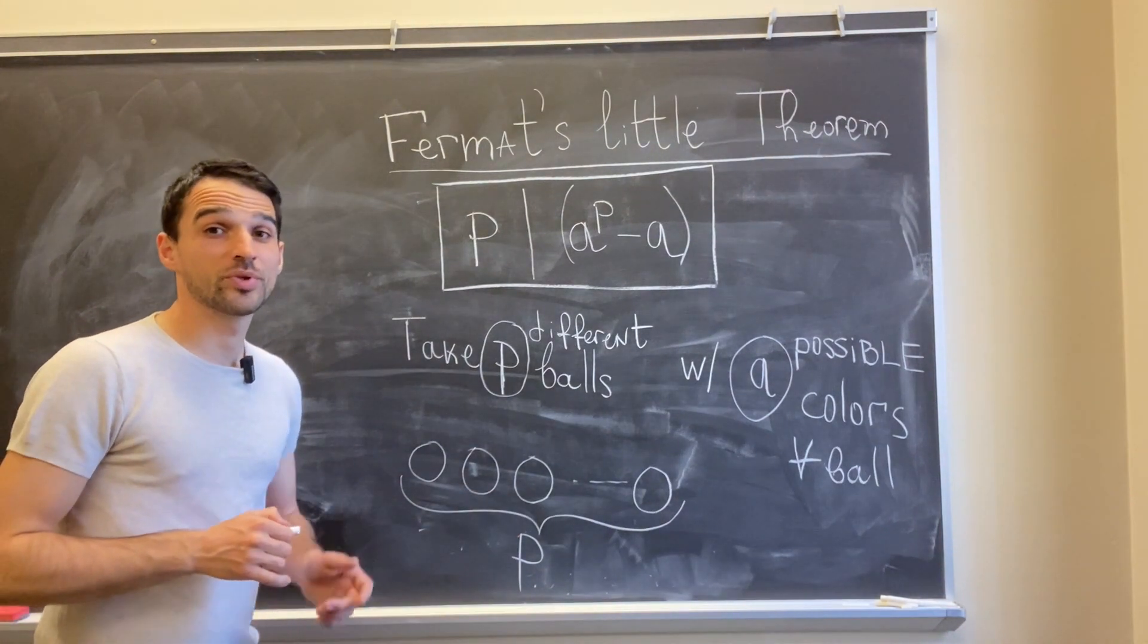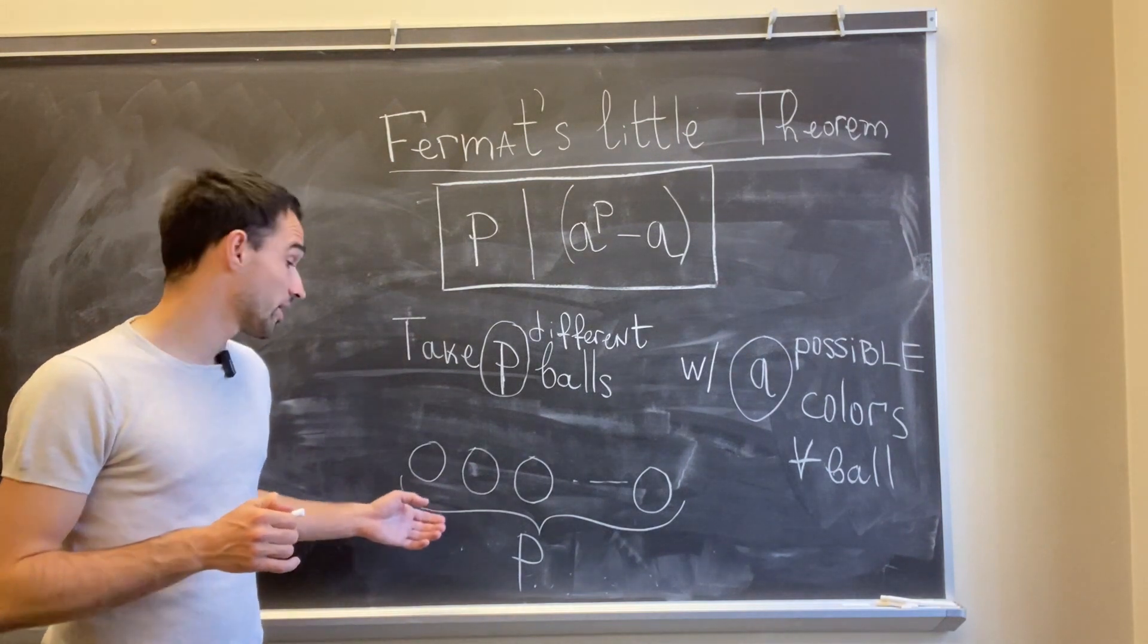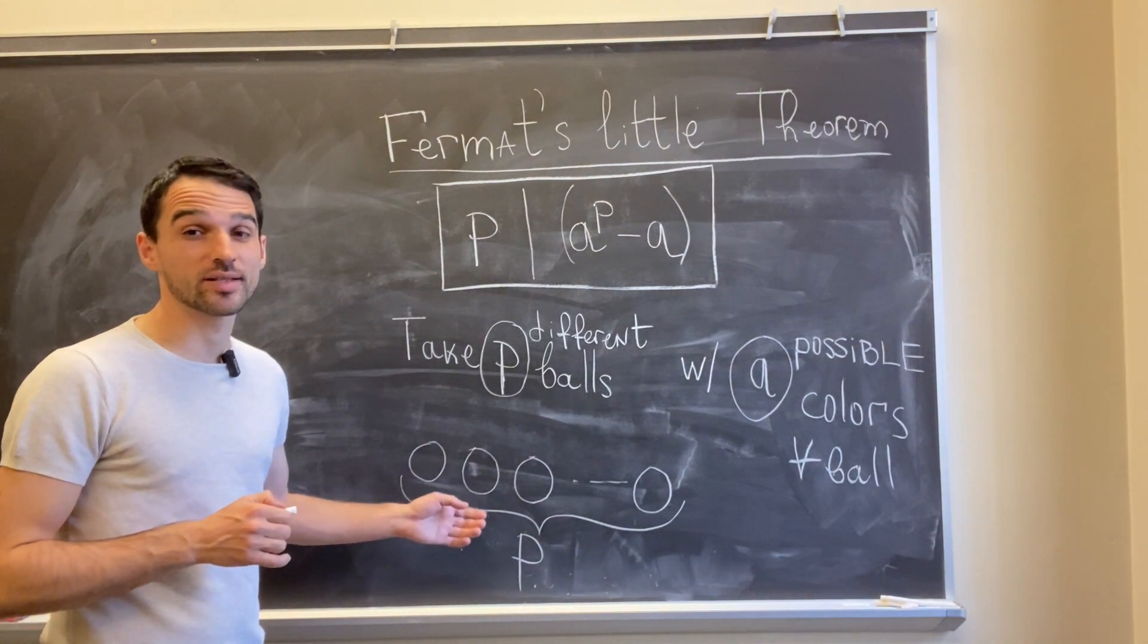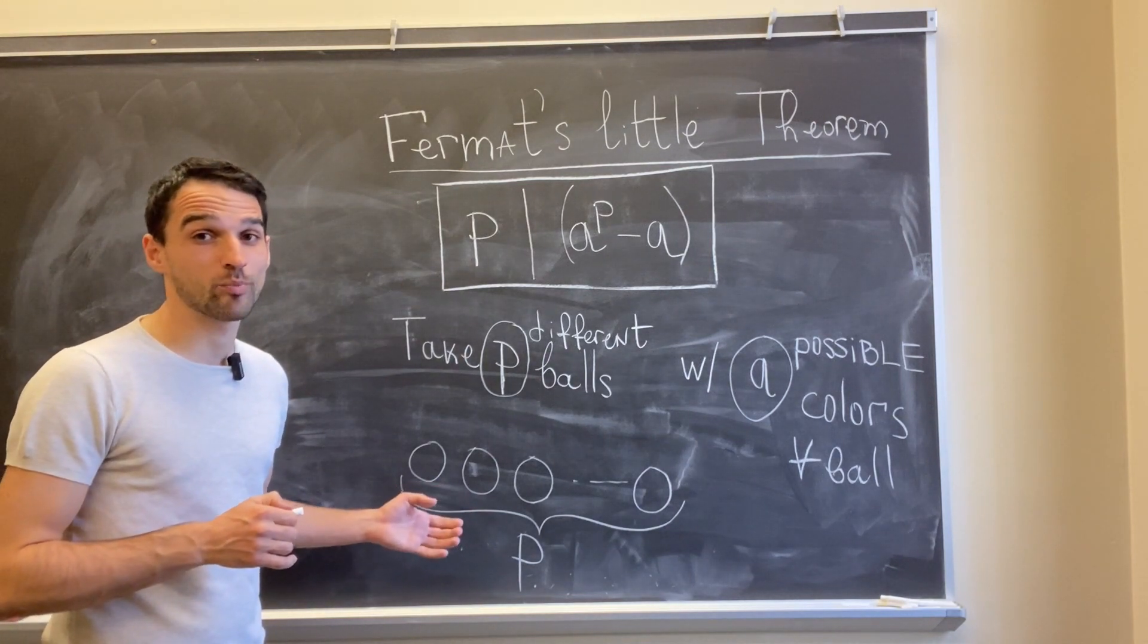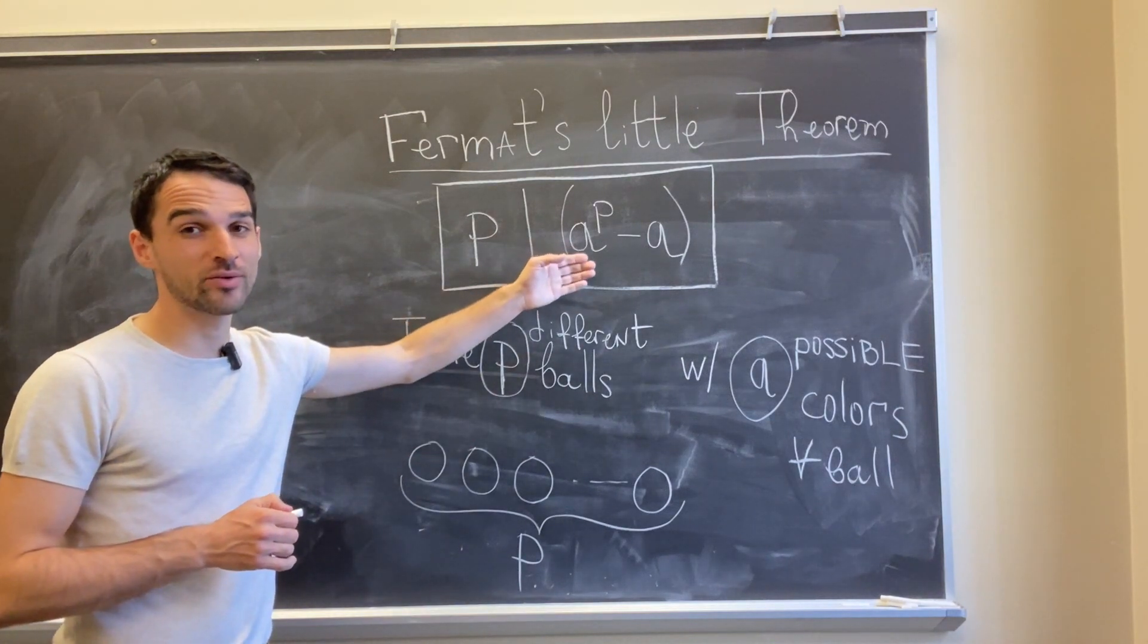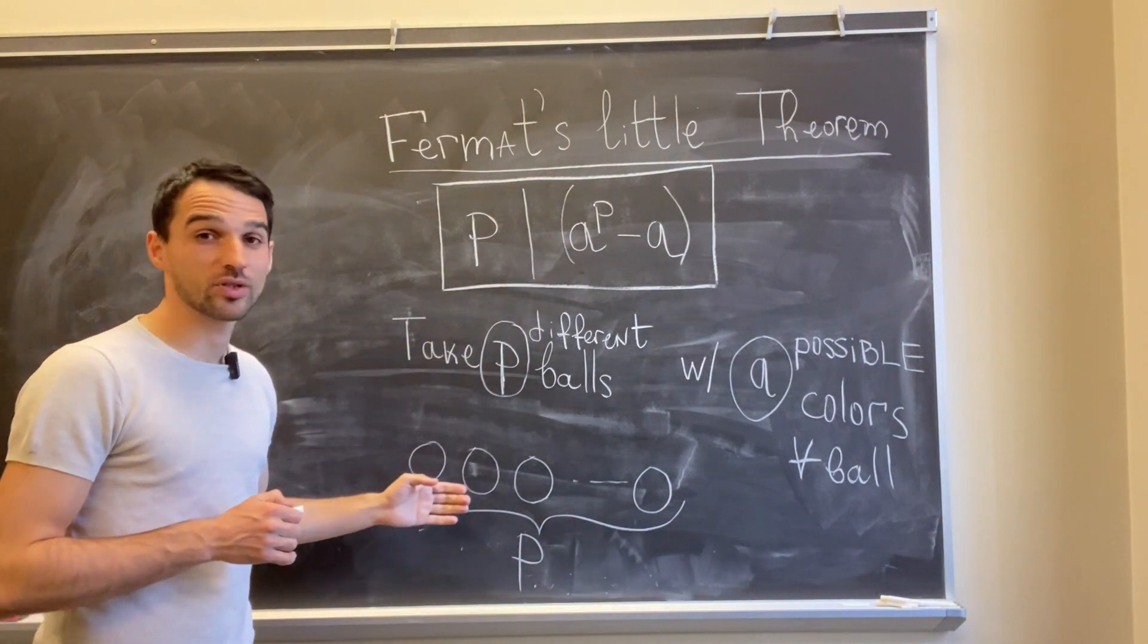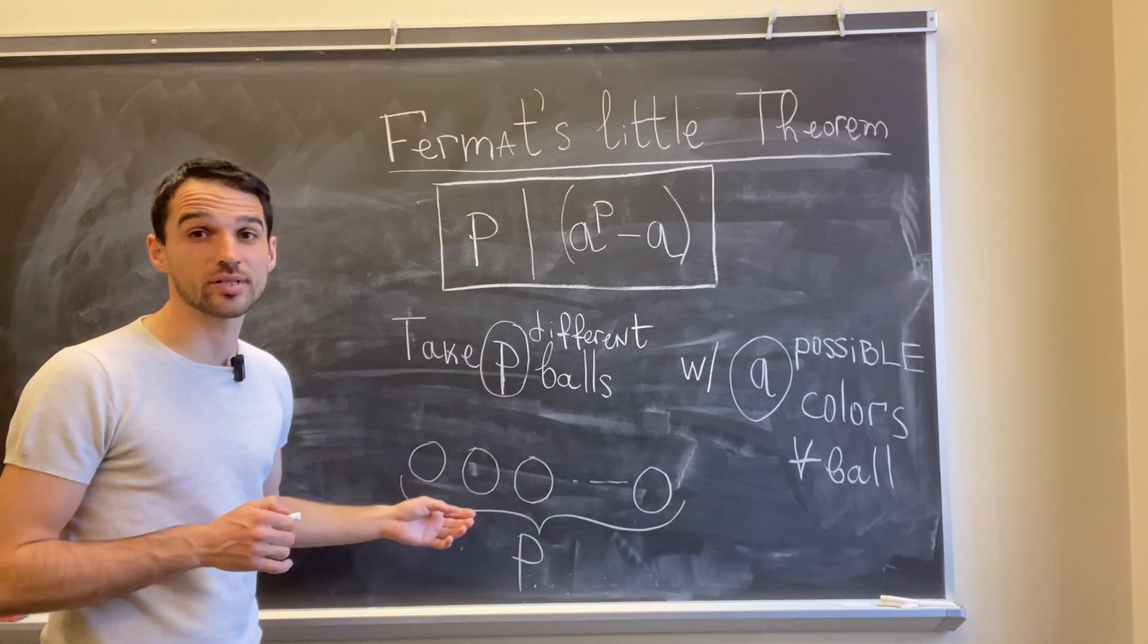So I have a to the p colorings, but let me subtract all those colorings where each ball is the same color. So I have exactly a such monochromatic colorings. So then a to the p minus a is exactly the number of those colorings where I have at least two balls in different colors.